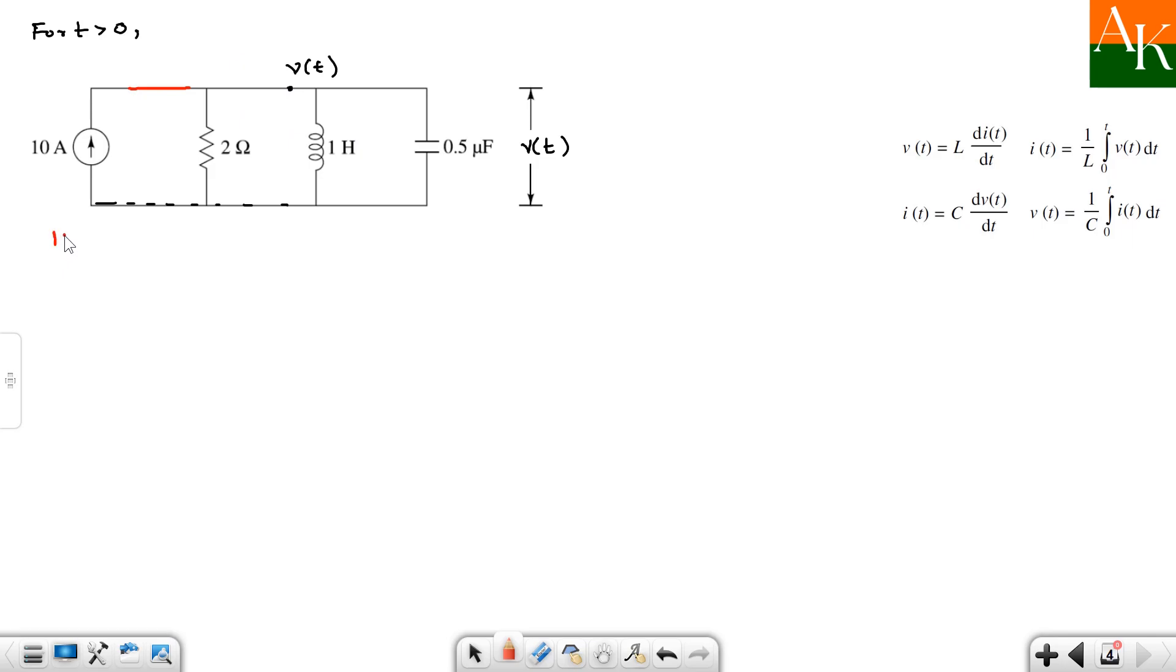Now we have to apply KCL at this node. Why KCL? Because you have to calculate voltage. And KCL says that summation of outgoing current is equal to summation of incoming current. The incoming current here is 10 ampere. So 10 ampere is incoming current I am writing over here. The remaining 3 currents I will assume as outgoing.